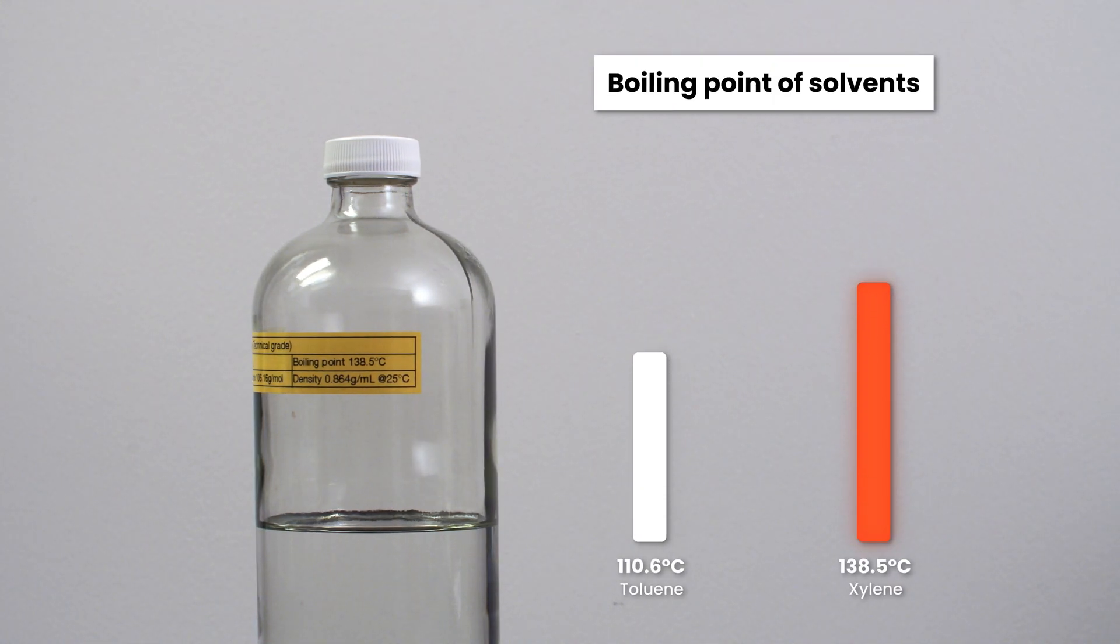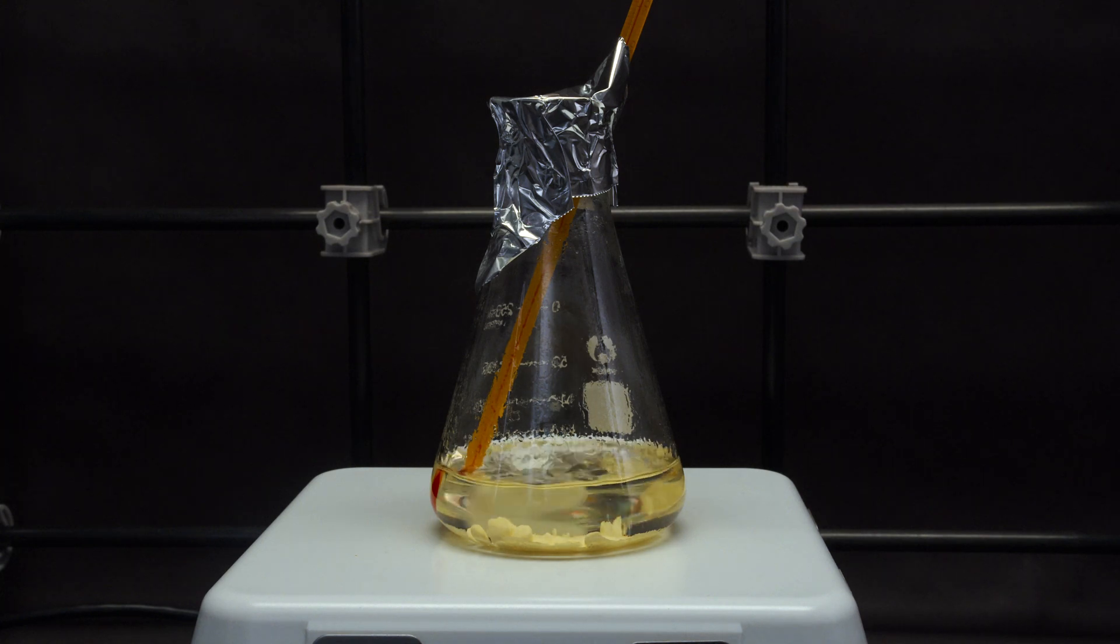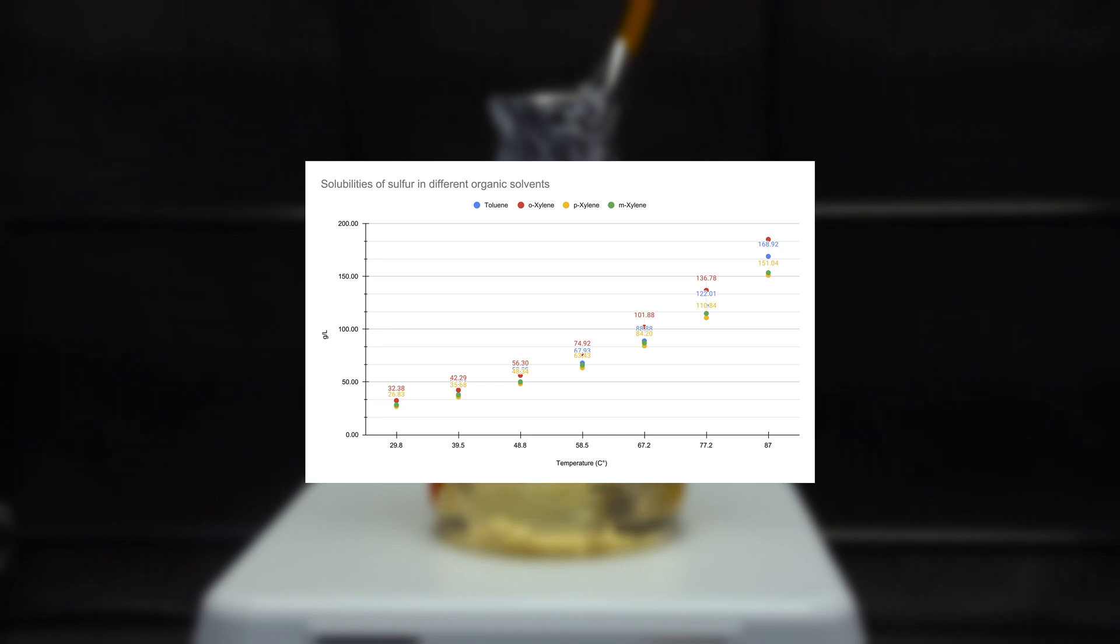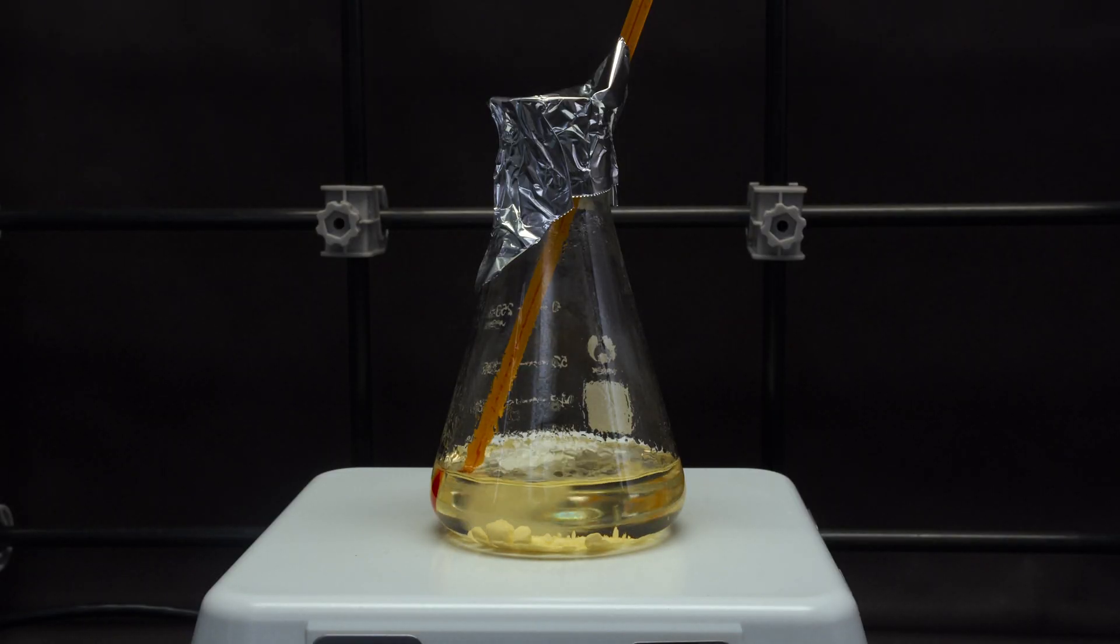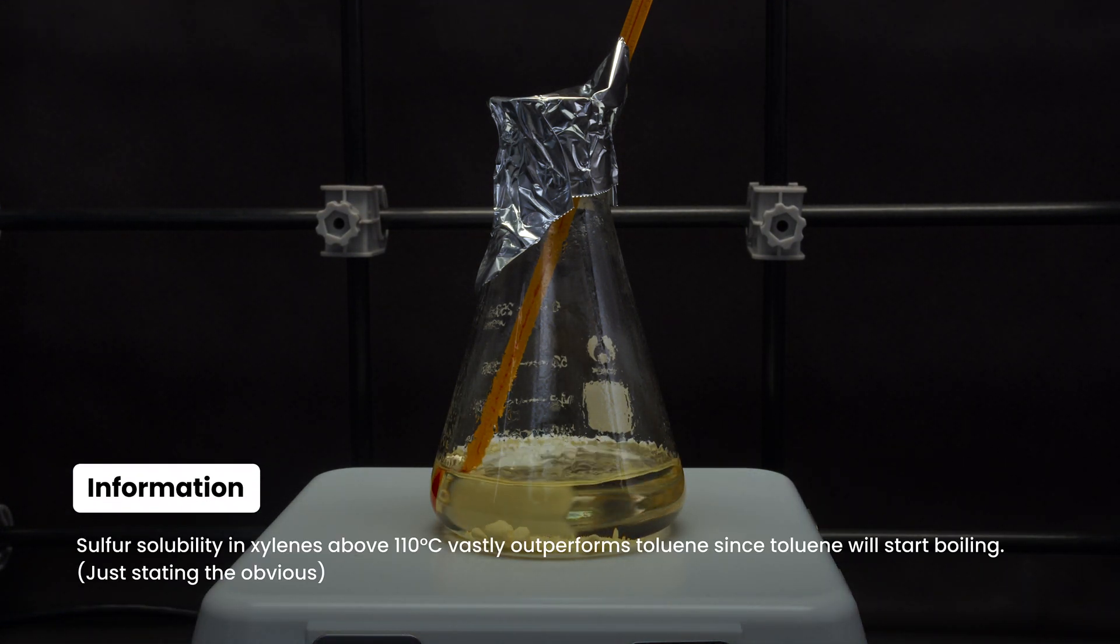But more importantly, it has a significantly higher boiling point than toluene. Therefore, I can utilize a higher temperature to dissolve sulfur. Sulfur solubility is similar for both xylene and toluene at the same temperature. However, as xylene can be heated significantly above the boiling point of toluene without boiling, more sulfur can be dissolved in the same amount of solvent.